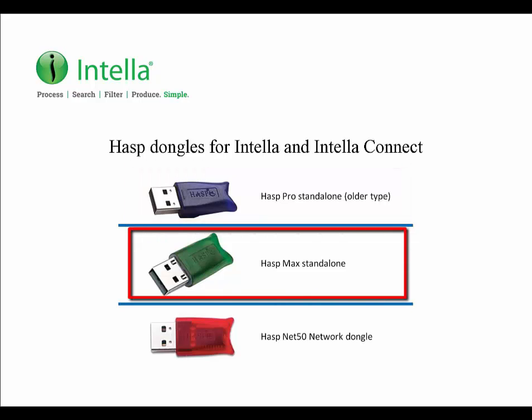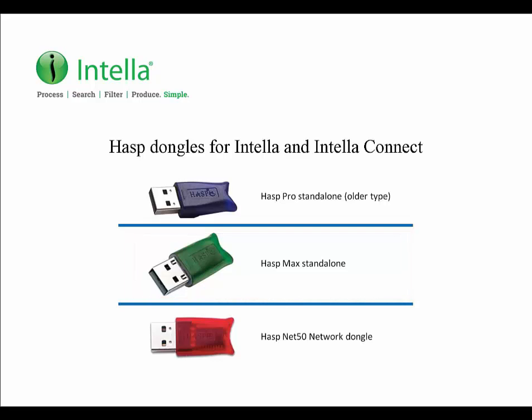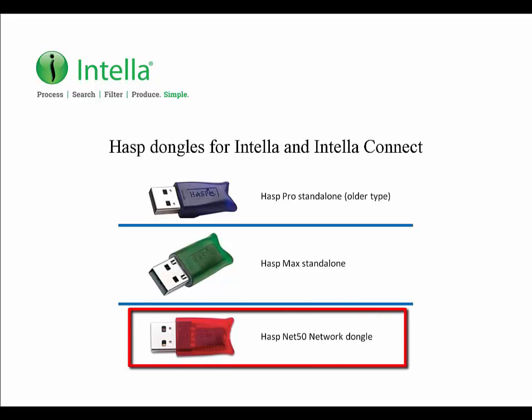The green dongle is a Hasp Max standalone dongle, which is similar to the purple dongle and is the dongle that we currently provide to our customers. These two types of dongles are standalone and therefore must be plugged into the system which you have IntelliKinect installed on. The red dongle is a Hasp network dongle. The difference for this dongle is that it can be plugged into any system on your network and any other computer running IntelliKinect can obtain a license from it.